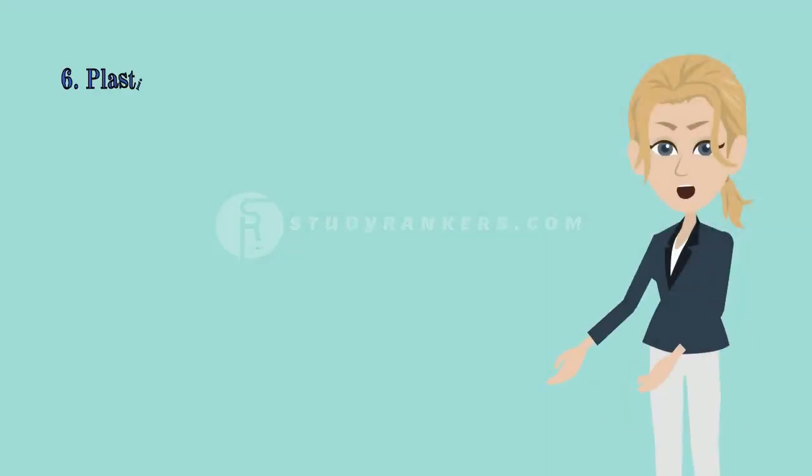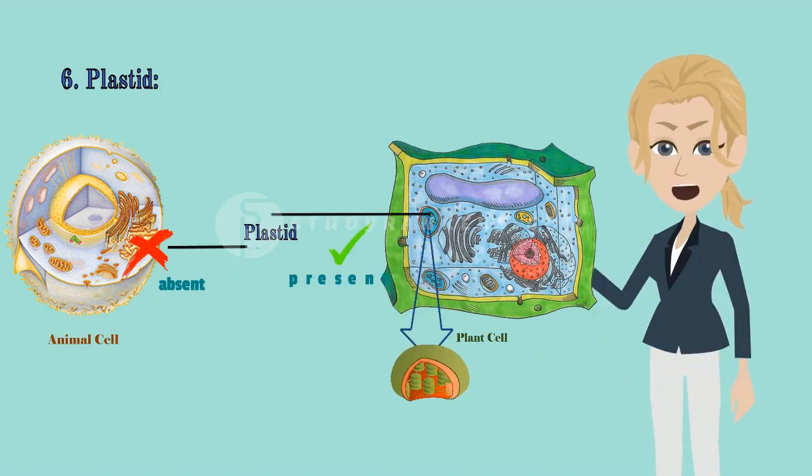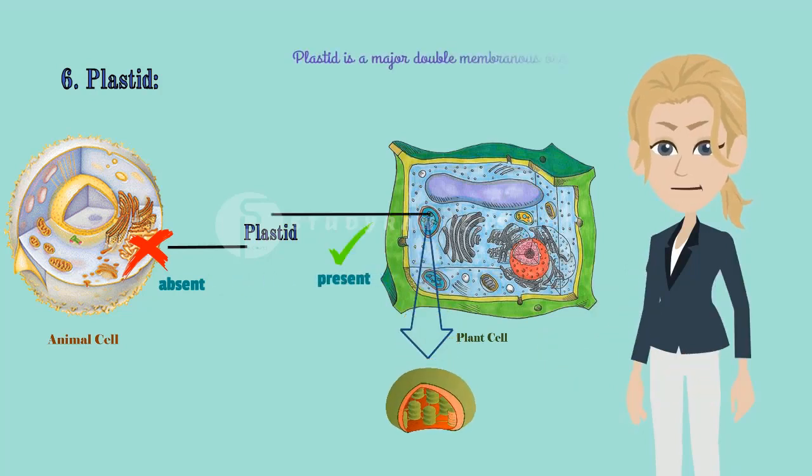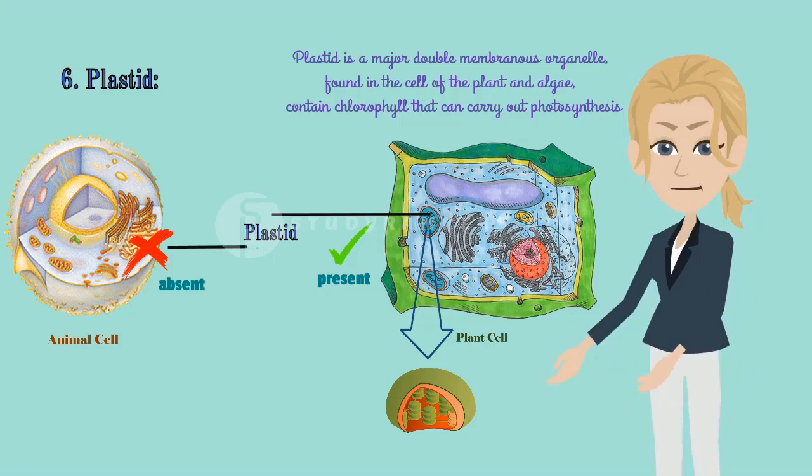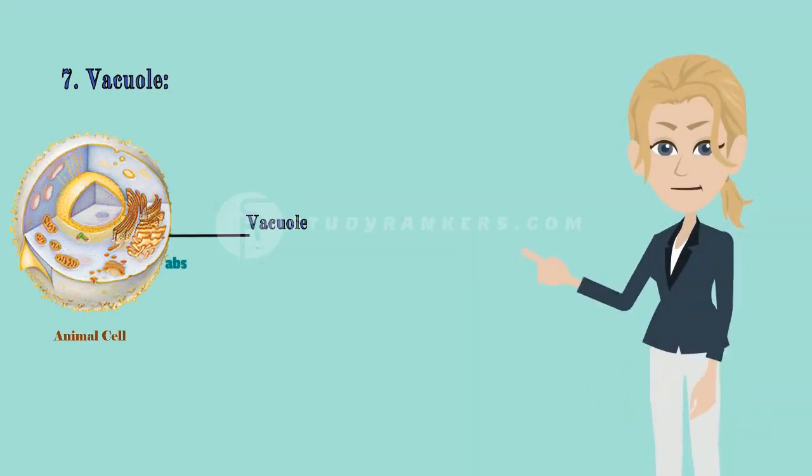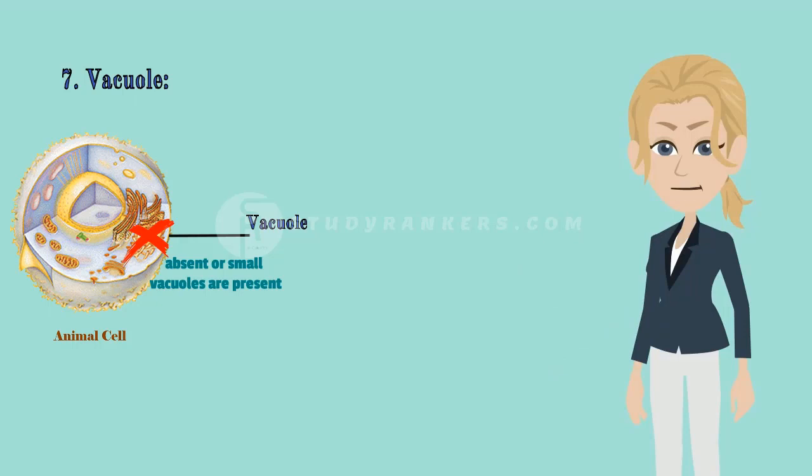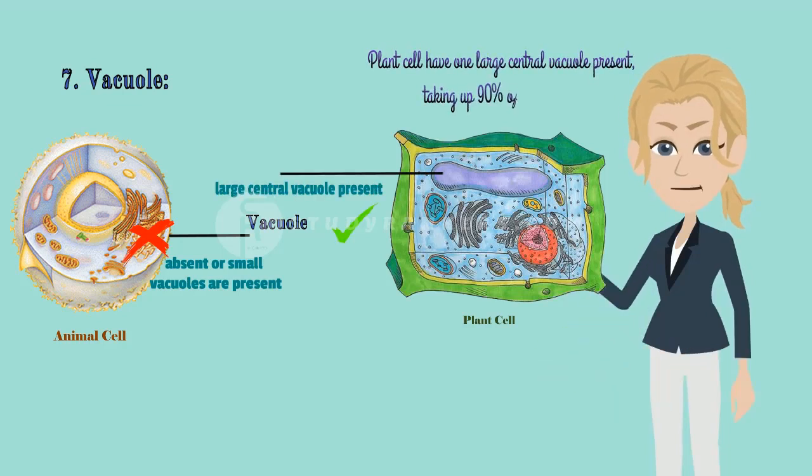Sixth, plastid. In animal cell, there is absence of plastid but in plant cells, plastids are present. Plastid is a major double membranous organelle found in the cell of the plant and the algae that contain chlorophyll that can carry out photosynthesis. Next is vacuole. Small vacuoles are present. Or we can say, vacuoles are smaller than plant cell. In plant cell, one large central vacuole is present taking up 90% of cell volume.